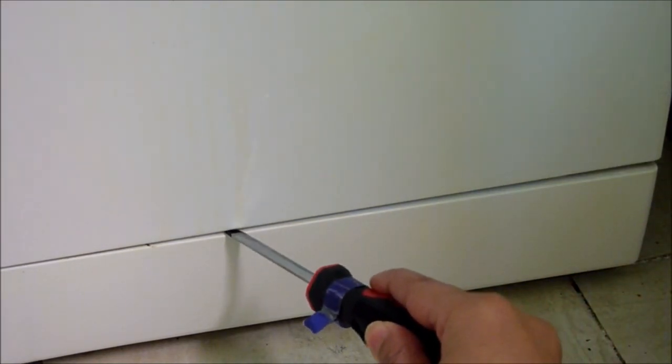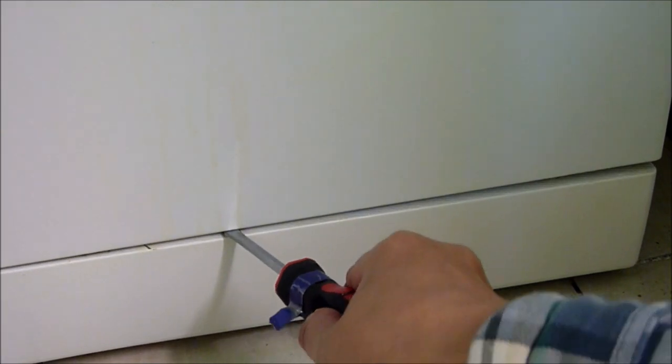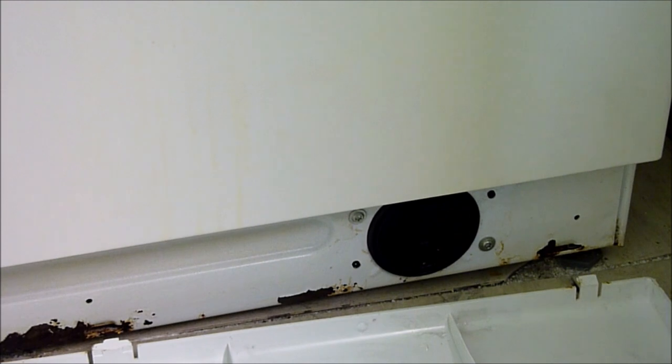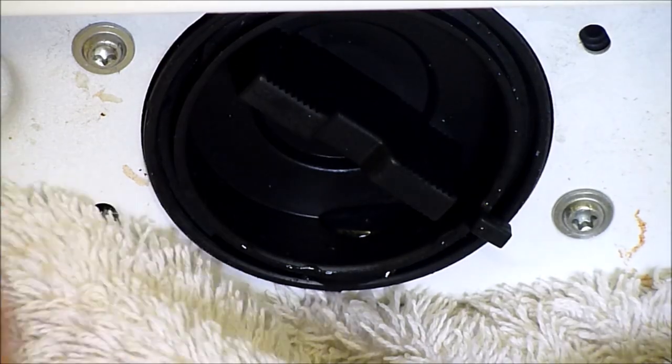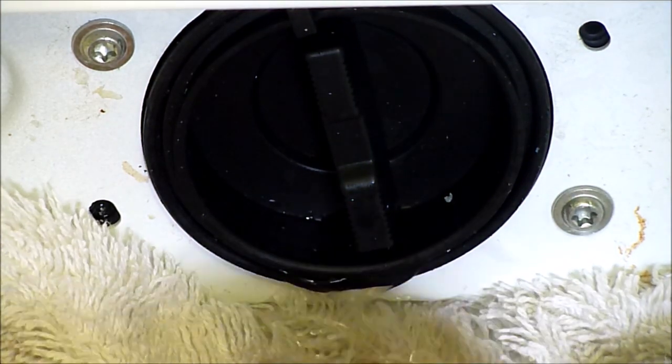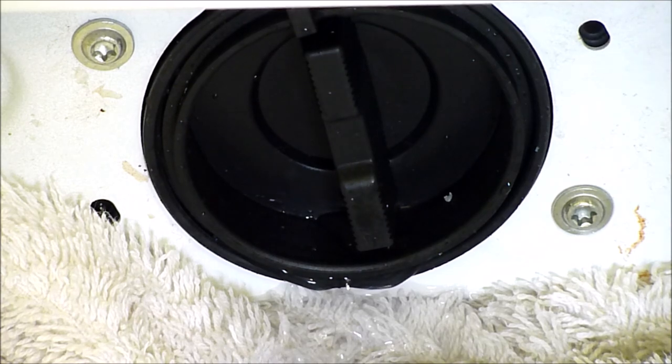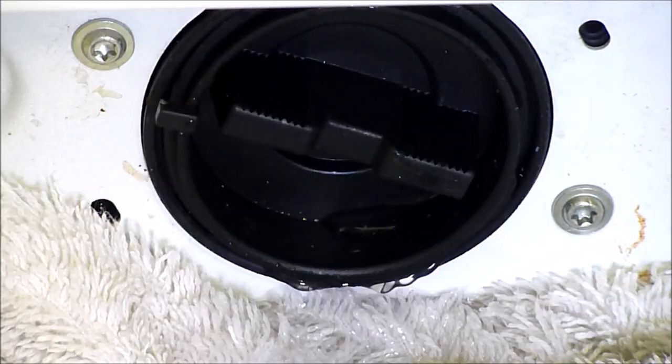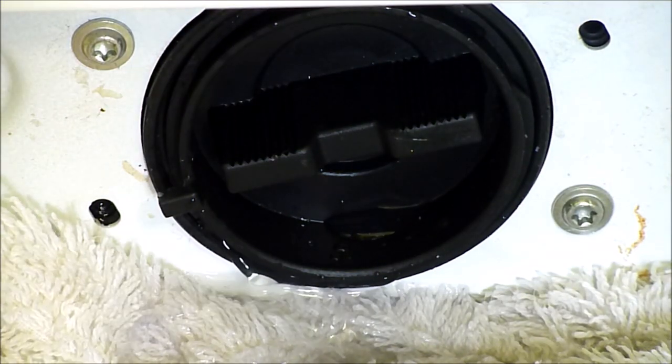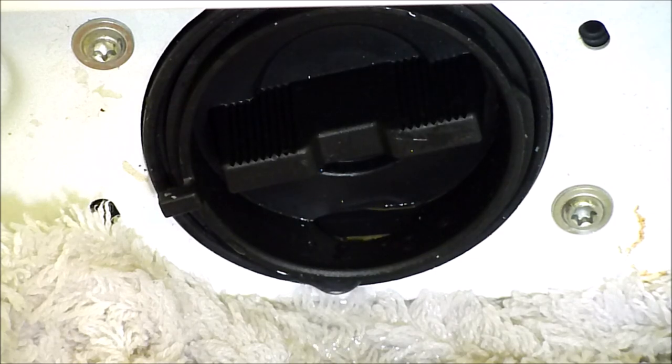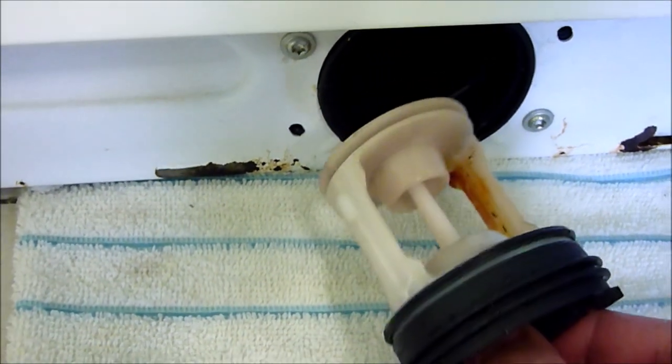So the second thing you should check is the drainage pump filter for any blockages. On the front load washing machine you will find the filter down the bottom, usually on the bottom right hand side. So open that, pull out the filter and check to see if anything has got stuck inside. Just feel around in there, and if you want to see a detailed video of me showing you how to drain the filter, then please click on the links after this video to see a full detailed video.